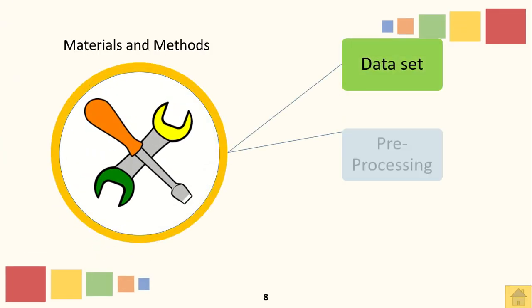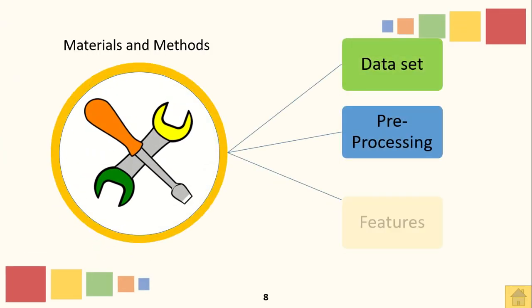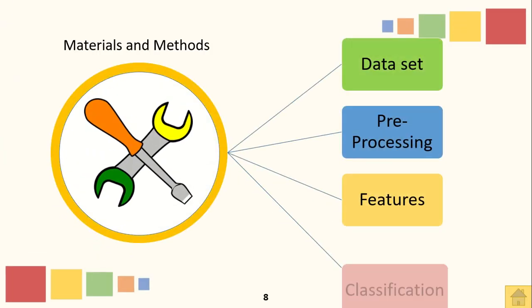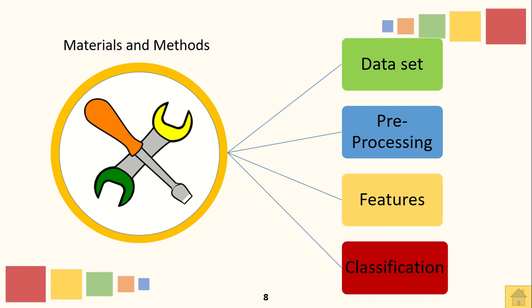Jumping on to the materials and methods, the main steps taken in this project include: first, the acquisition of data, since there were no available online datasets for pulse plethysmographic-based data signals or DCM signals; next, pre-processing of the required signals; after that, feature extraction; and lastly, classification.